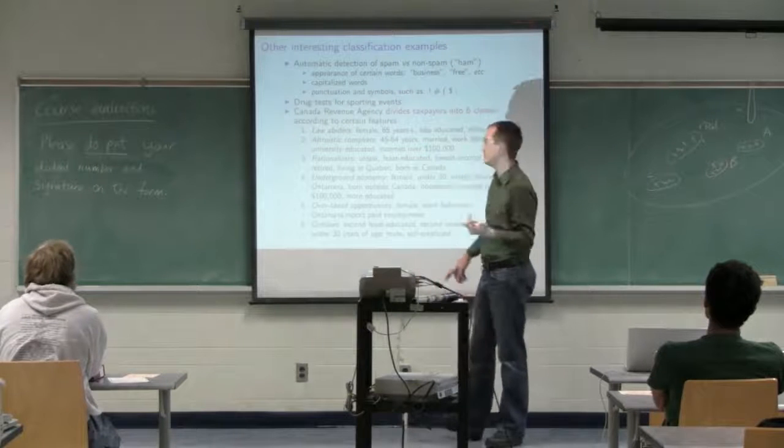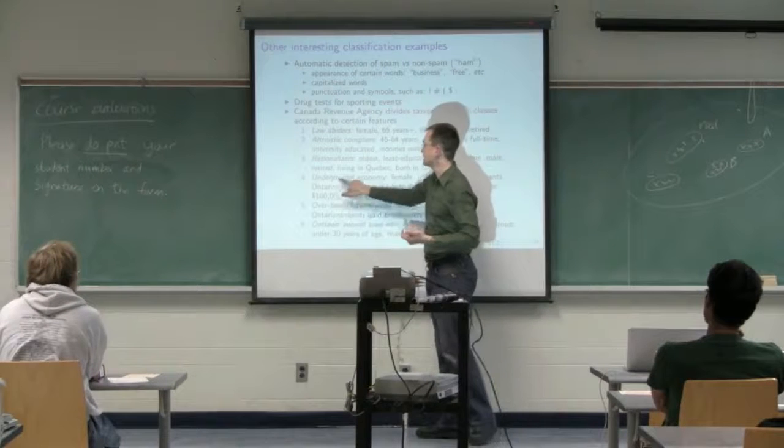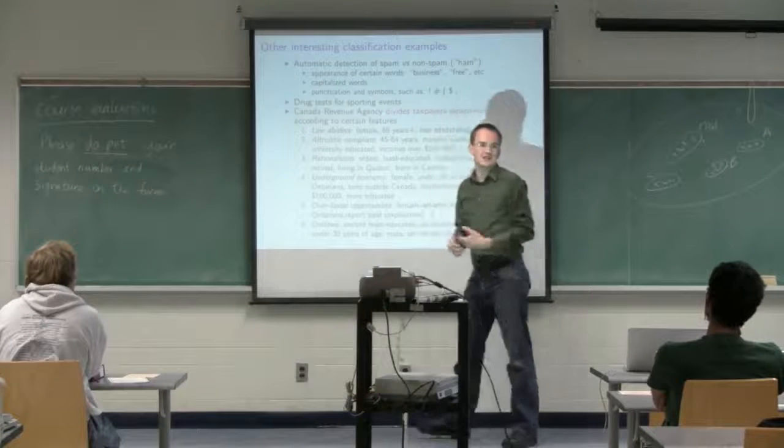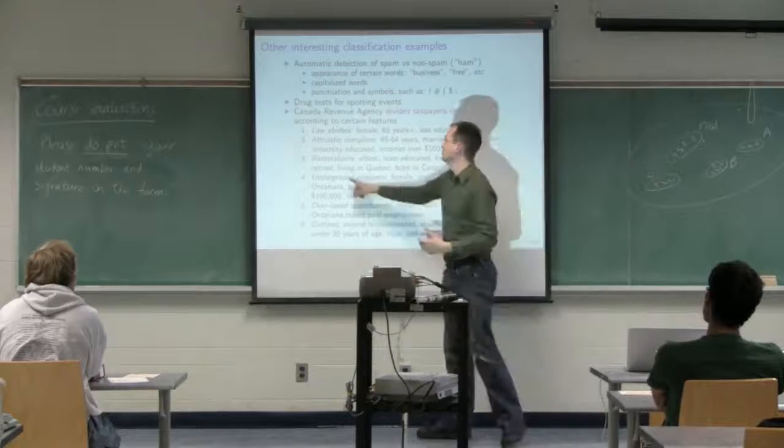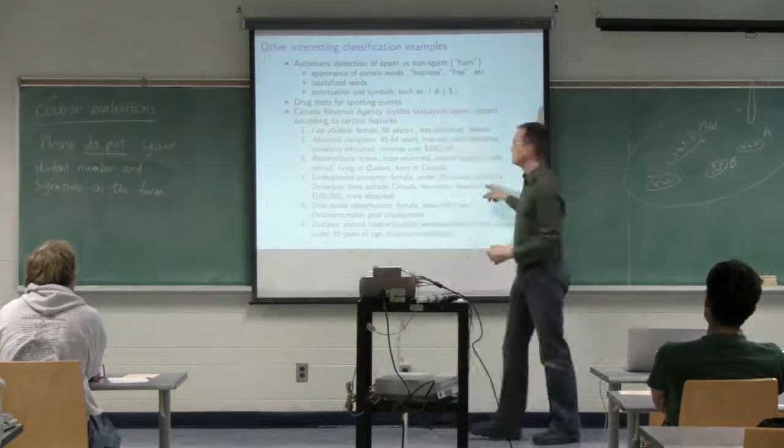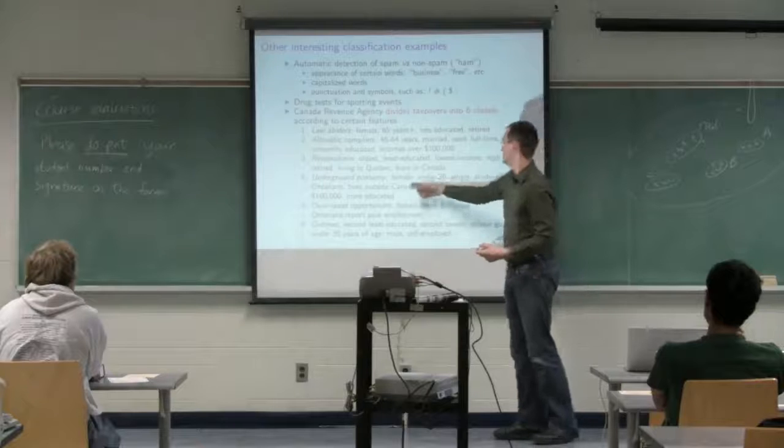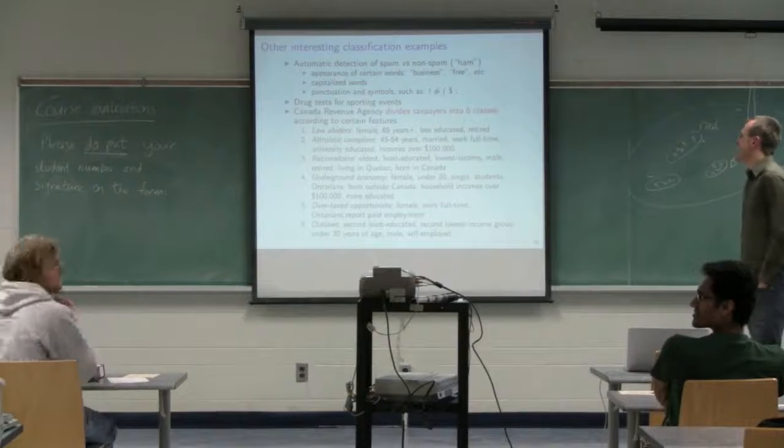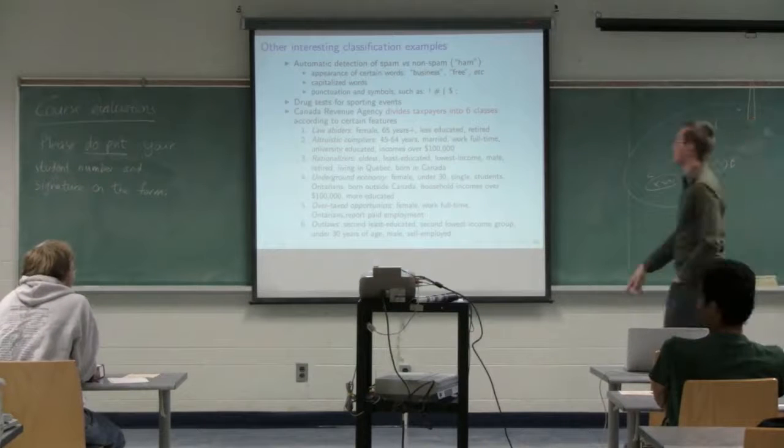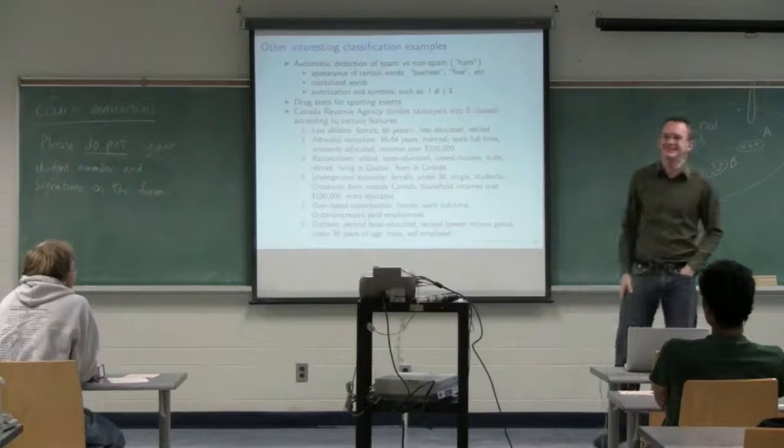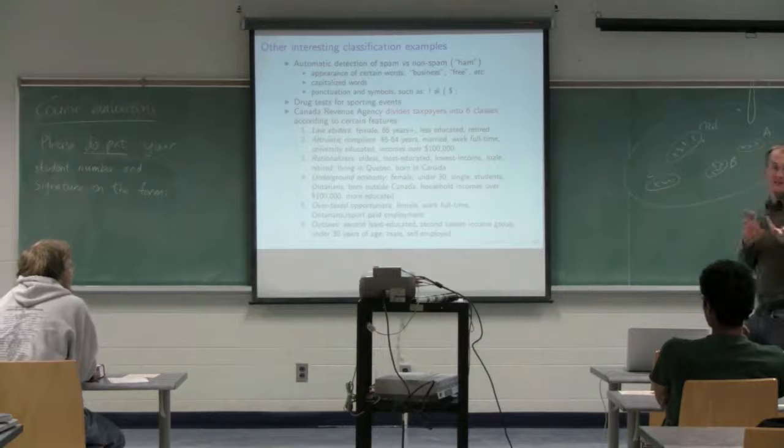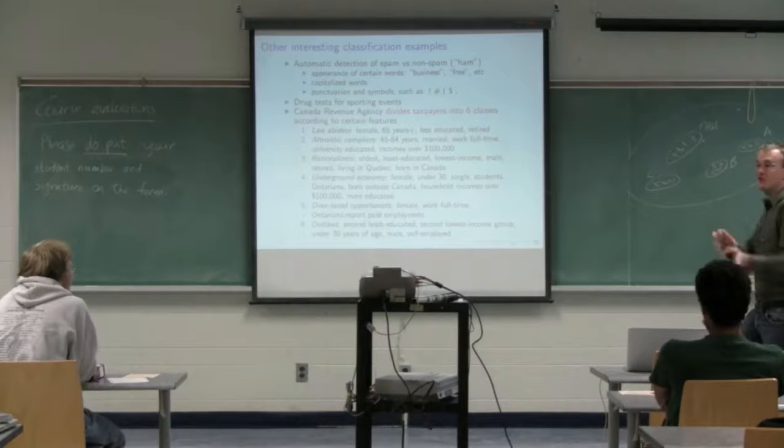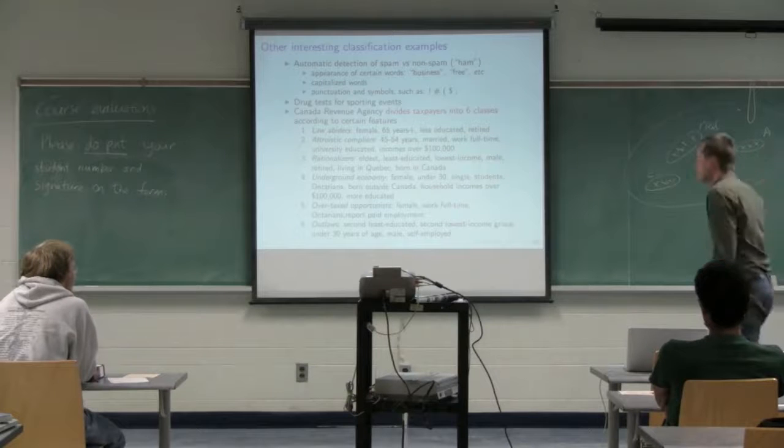These are the people that are more compliant to less compliant. What is it about the underground economy category that's different from rationalized? If we can understand that firstly, then we know what we need to change to encourage people to move from one category to the next. Is it an educational tool we need to provide to people that fall in this category? If these people need education or information to encourage them to become more law-abiding, we know where to find them. We know where to target: females under 30, single students. Once you understand your categories, you know how to try and move from one category to the next.